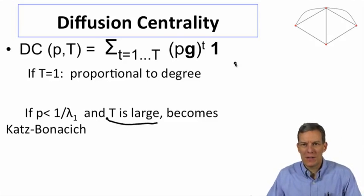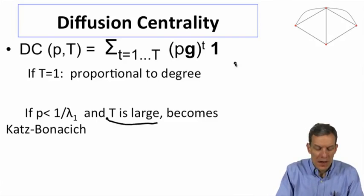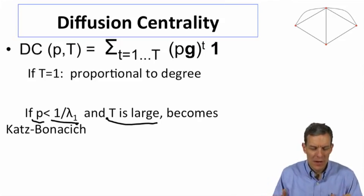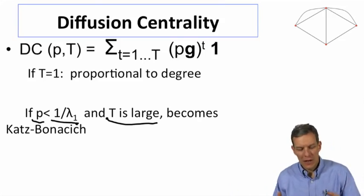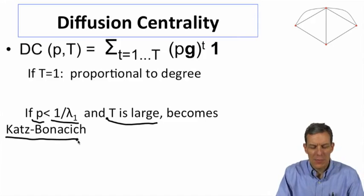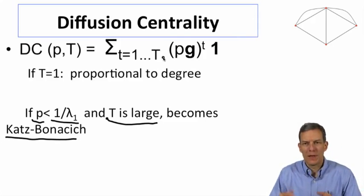If we look at a situation where T becomes large, then this is beginning to look like the Bonacich centrality calculation. And in particular, if P is smaller than 1 over the largest eigenvalue of the matrix, the adjacency matrix, then this thing will converge, and indeed it will converge to Katz-Bonacich centrality where the P is playing the role of the weight.